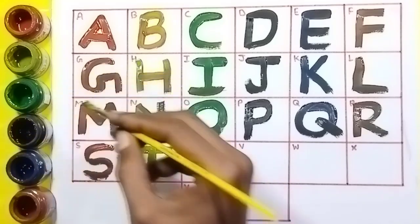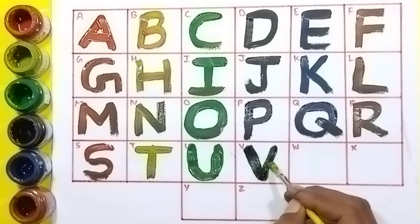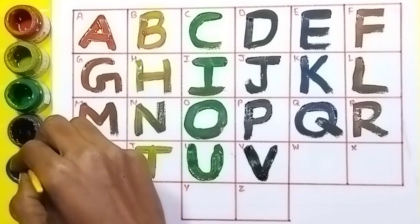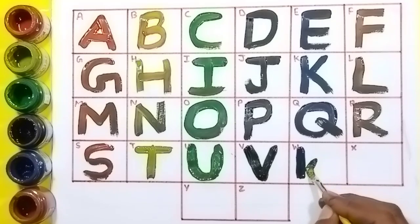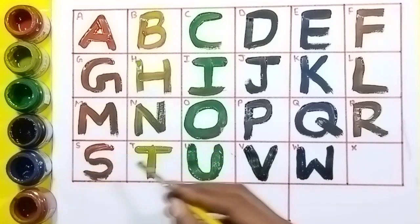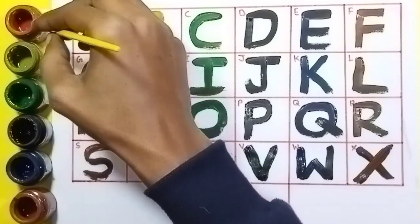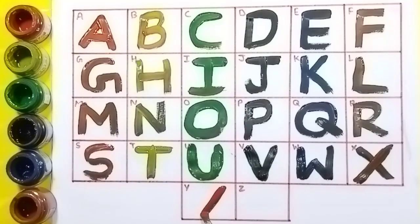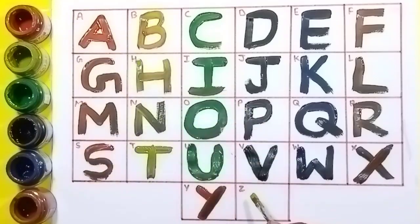Black color: V, V for van. Blue color: W, W for watch. Brown color: X, X for x-ray. Red color: Y, Y for yak. Yellow color: Z, Z for zebra.